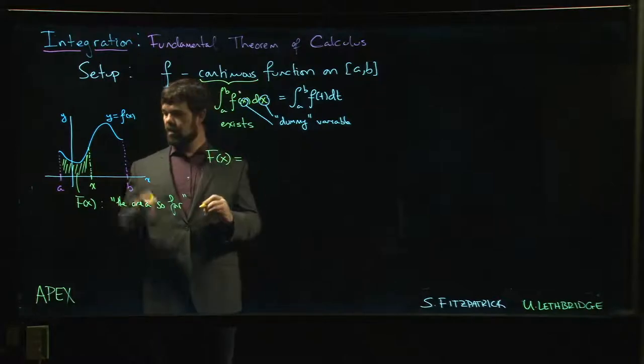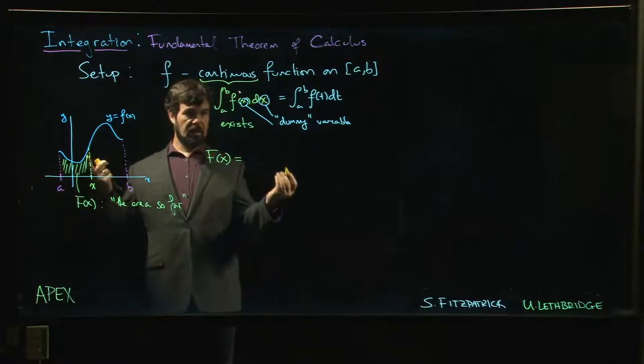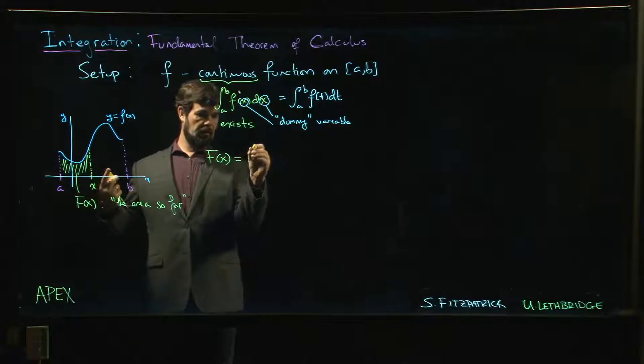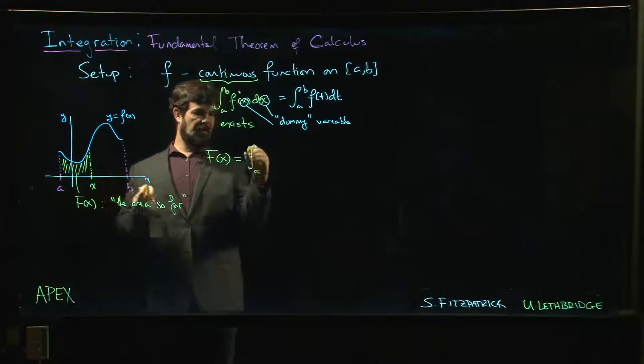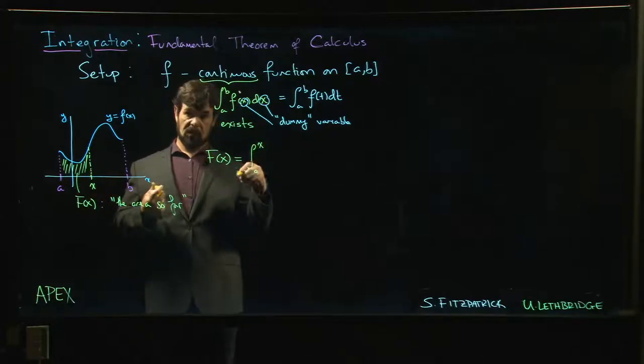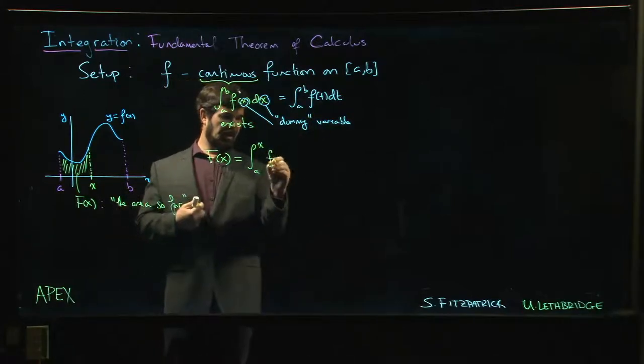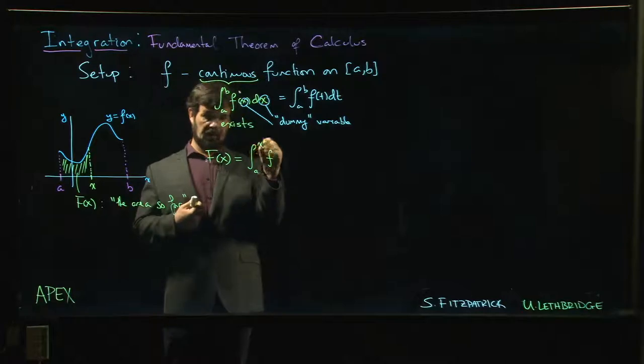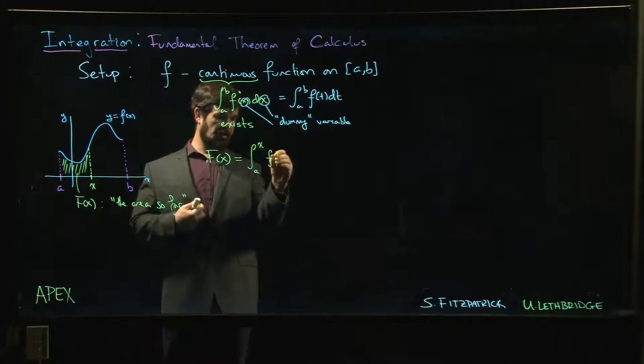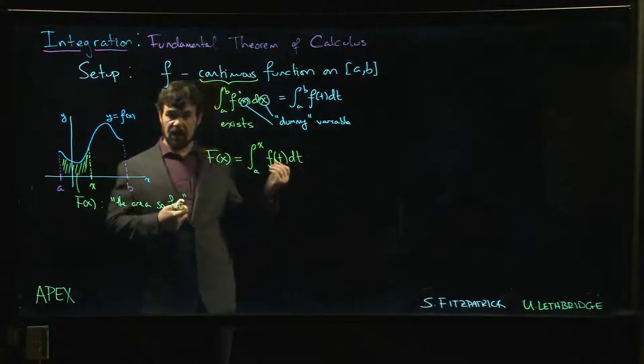It's just an integral - definite integrals compute area. So the only difference is that instead of going from a to b, we're going from a to x. And here's where I need some sort of dummy variable because I can't use x again. I've already got x here as a limit of integration. It wouldn't make sense to put it here as well.